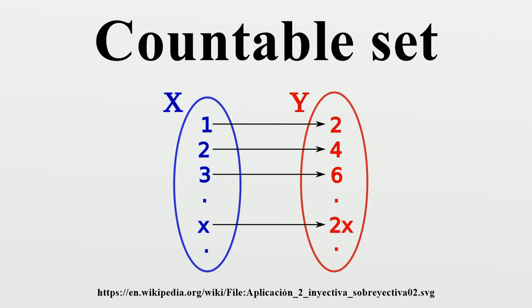In mathematics, a countable set is a set with the same cardinality as some subset of the set of natural numbers. A countable set is either a finite set or a countably infinite set. Whether finite or infinite, the elements of a countable set can always be counted one at a time, although the counting may never finish. Every element of the set is associated with a natural number.